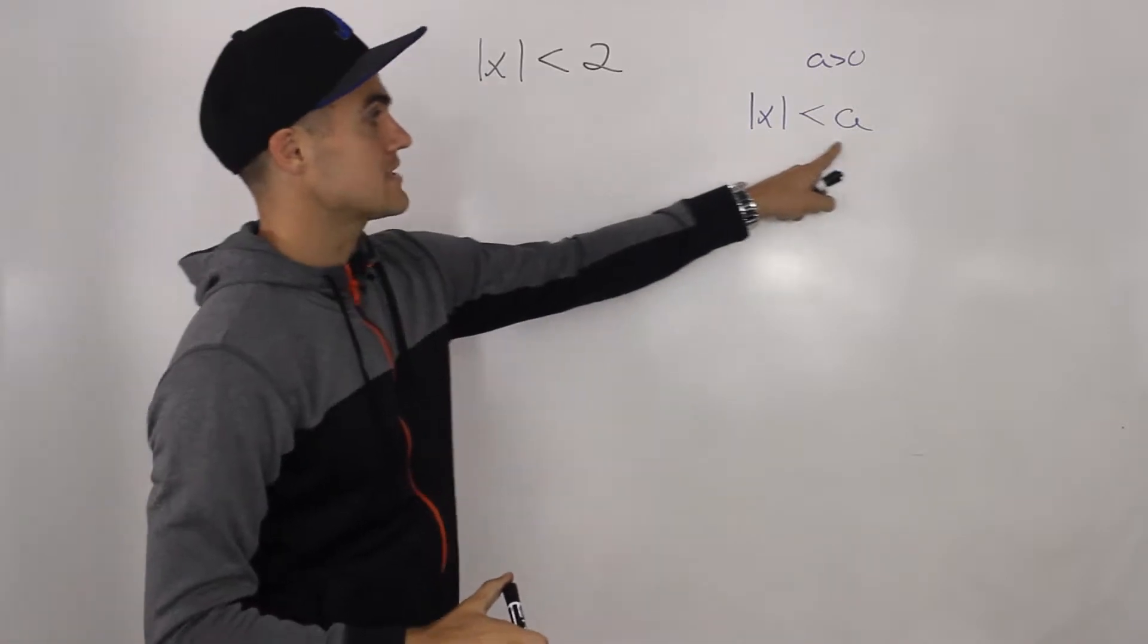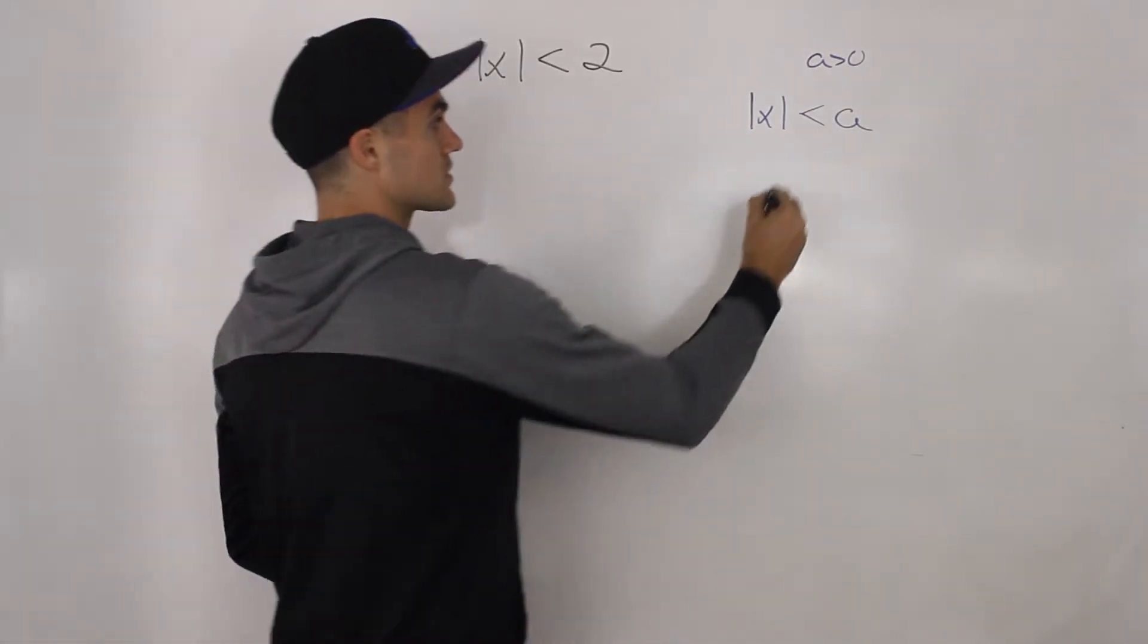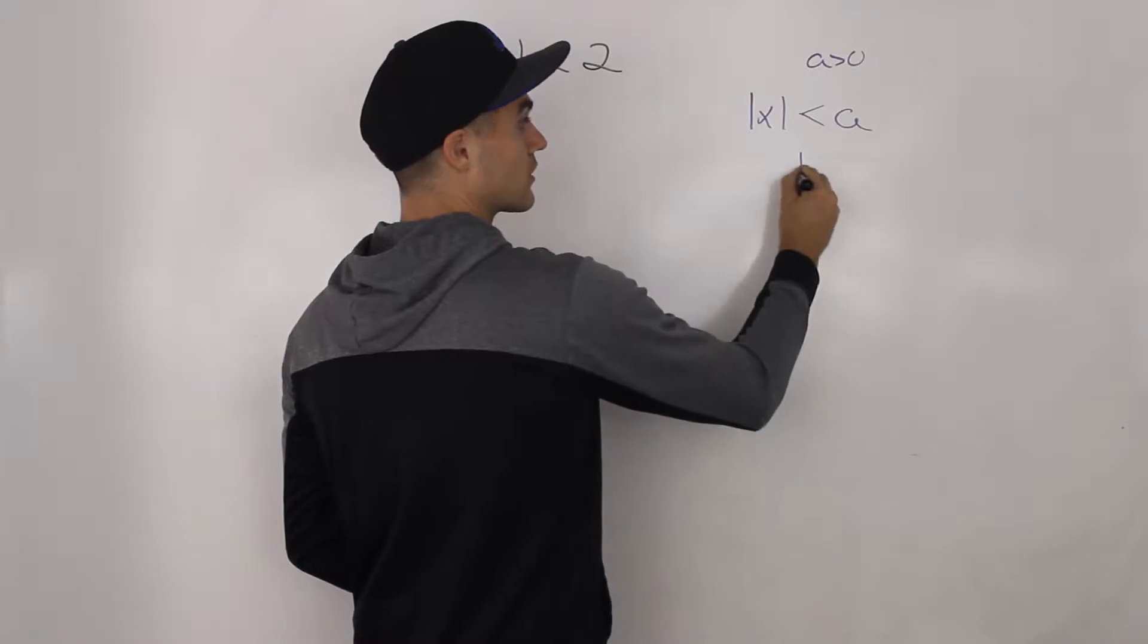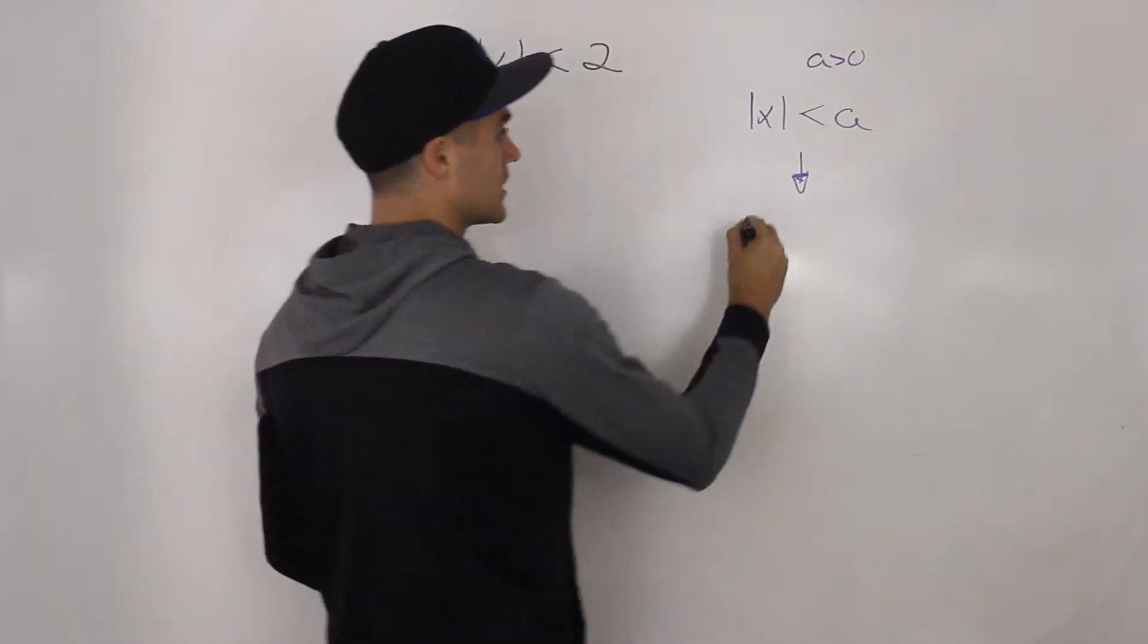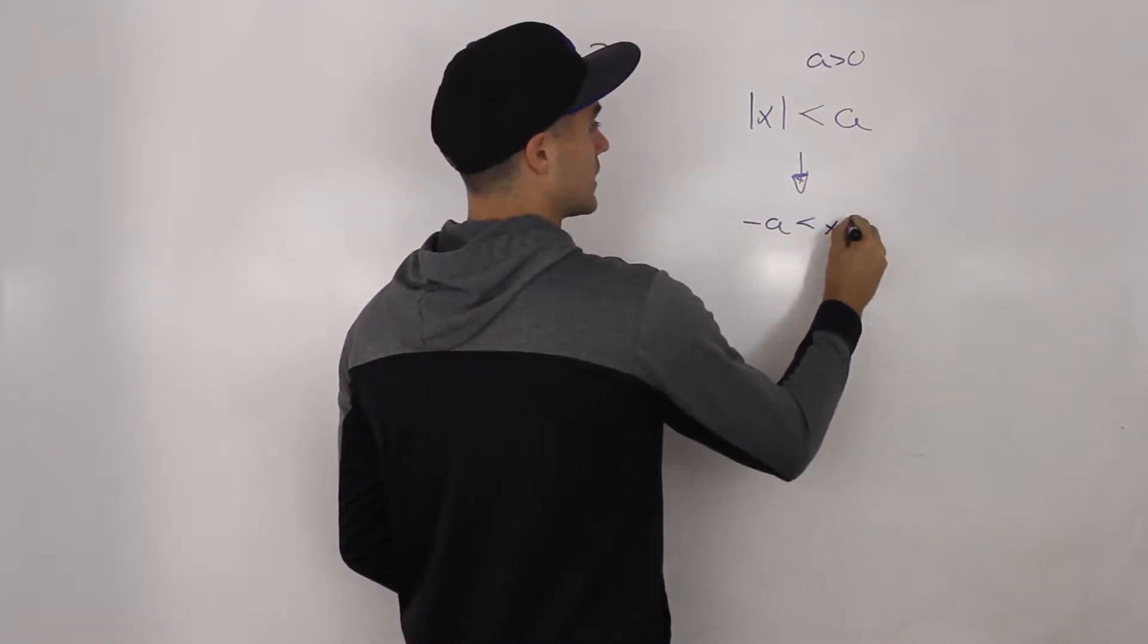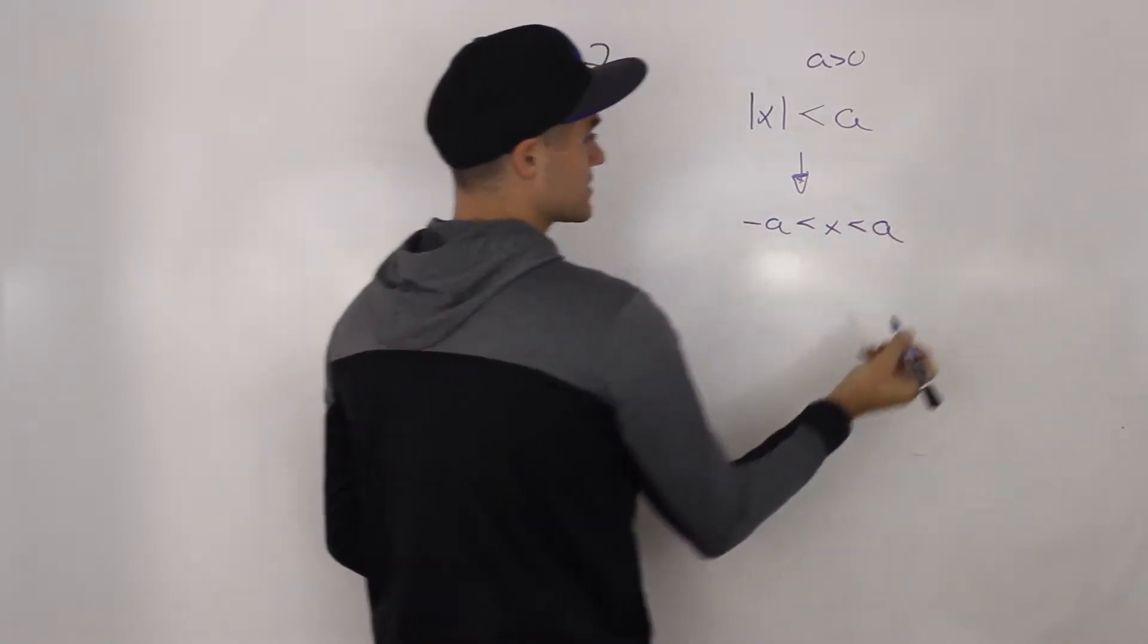This is the absolute value inequality, and we can express it as a regular inequality where x has to be between negative a and positive a.